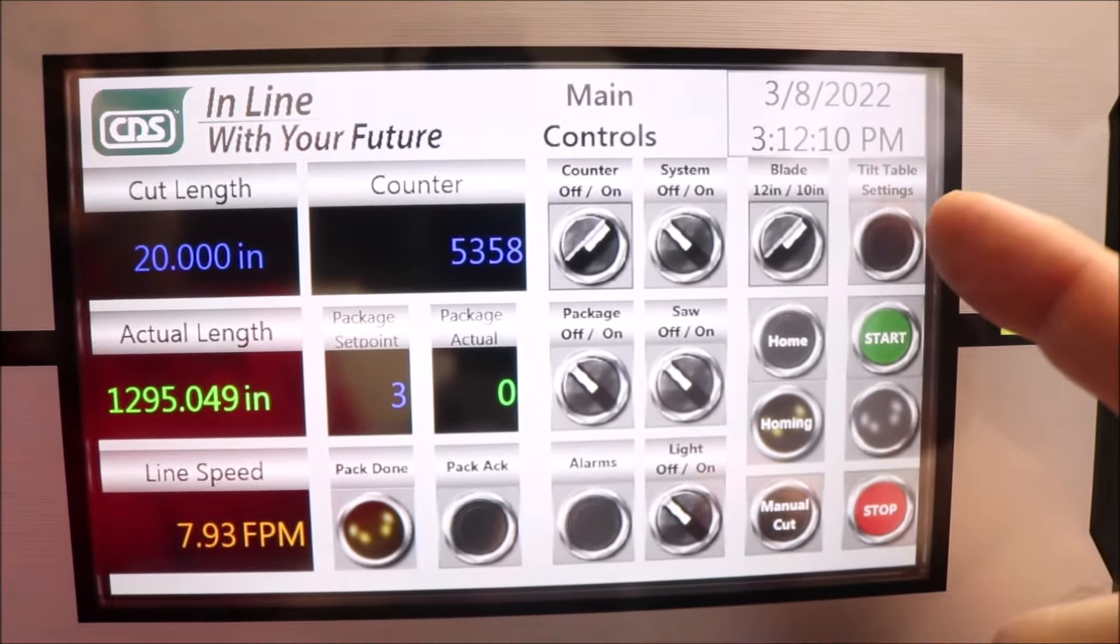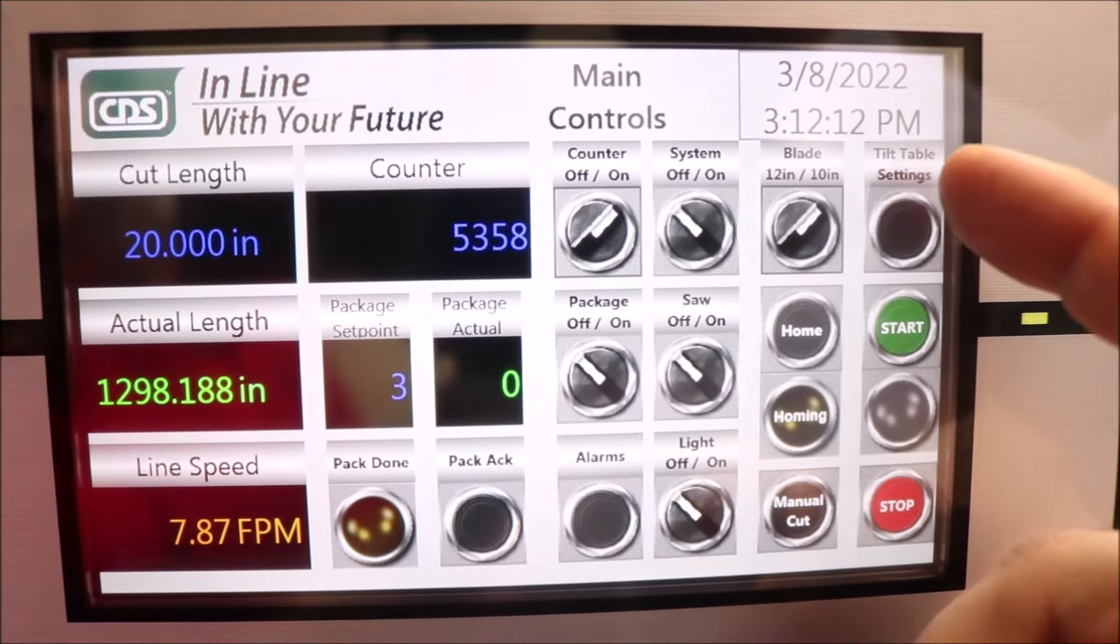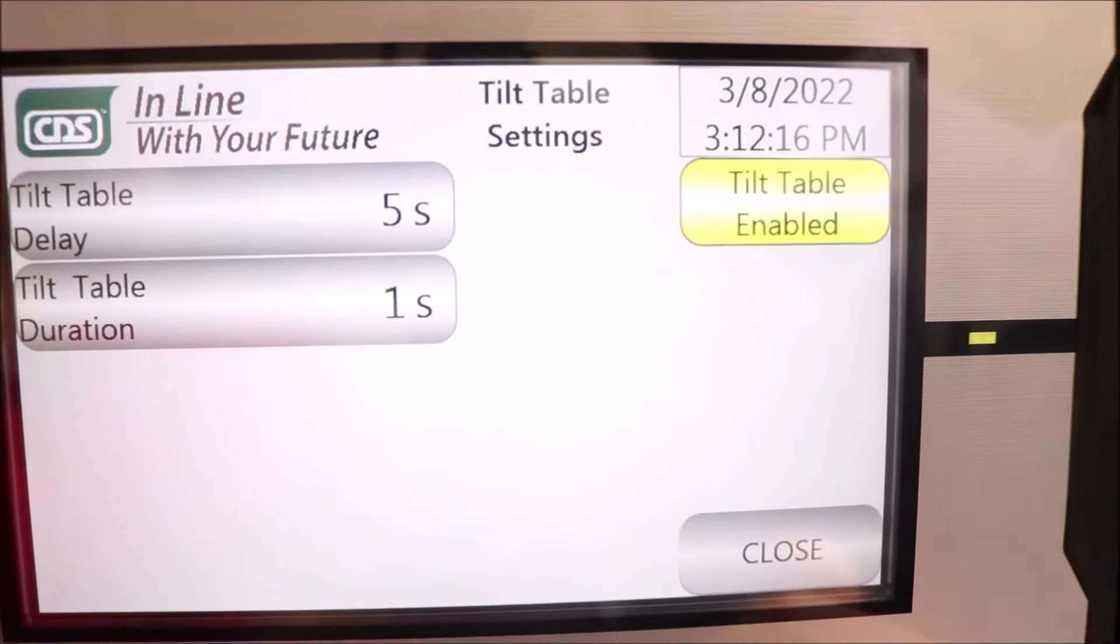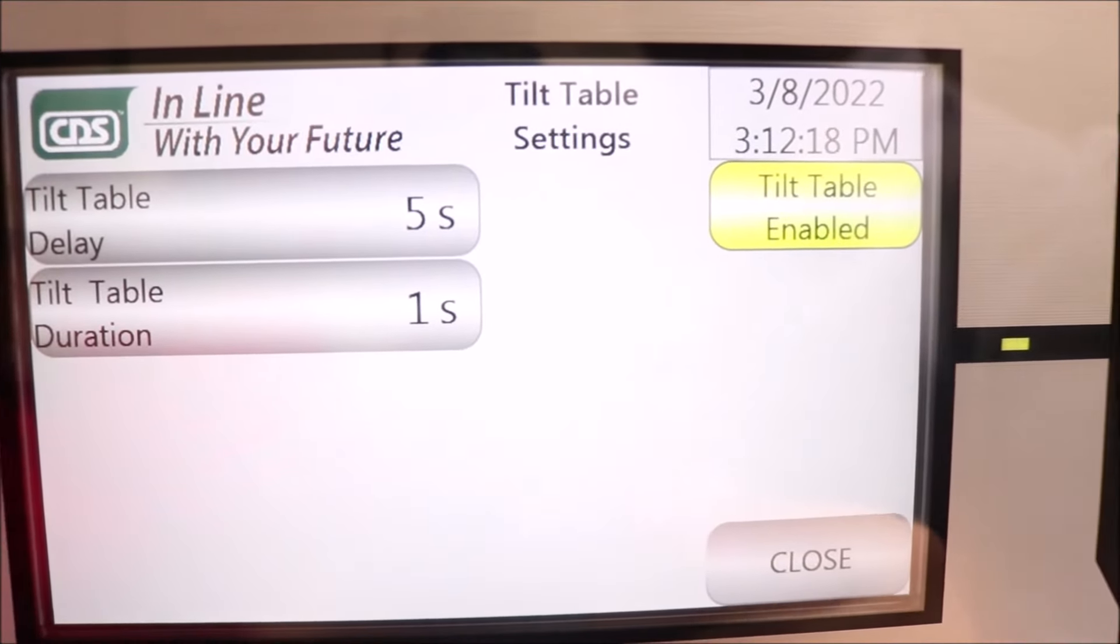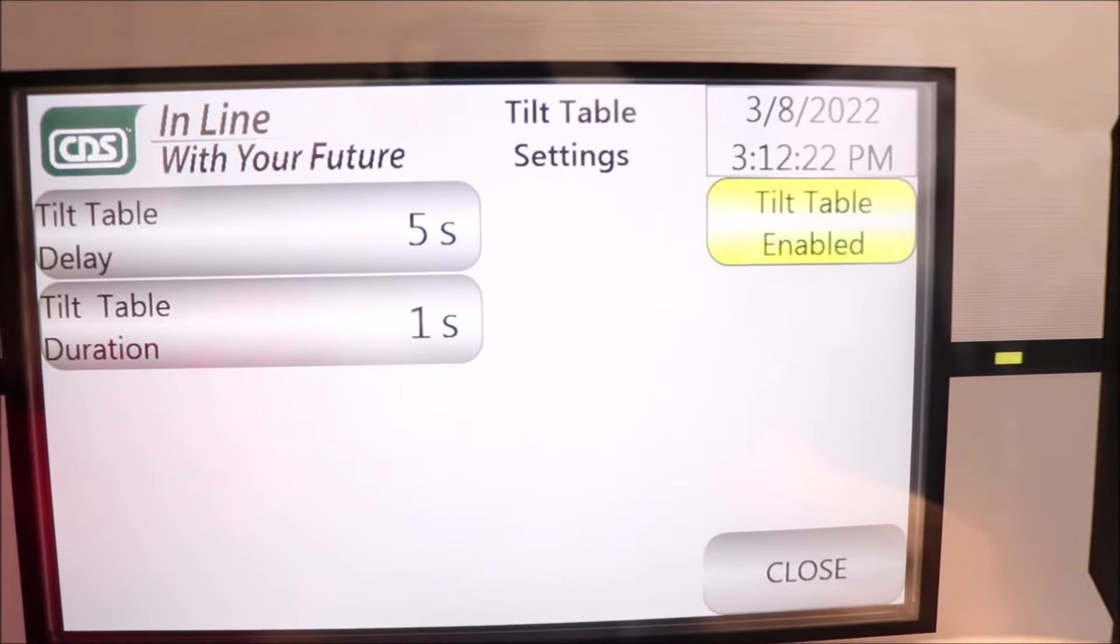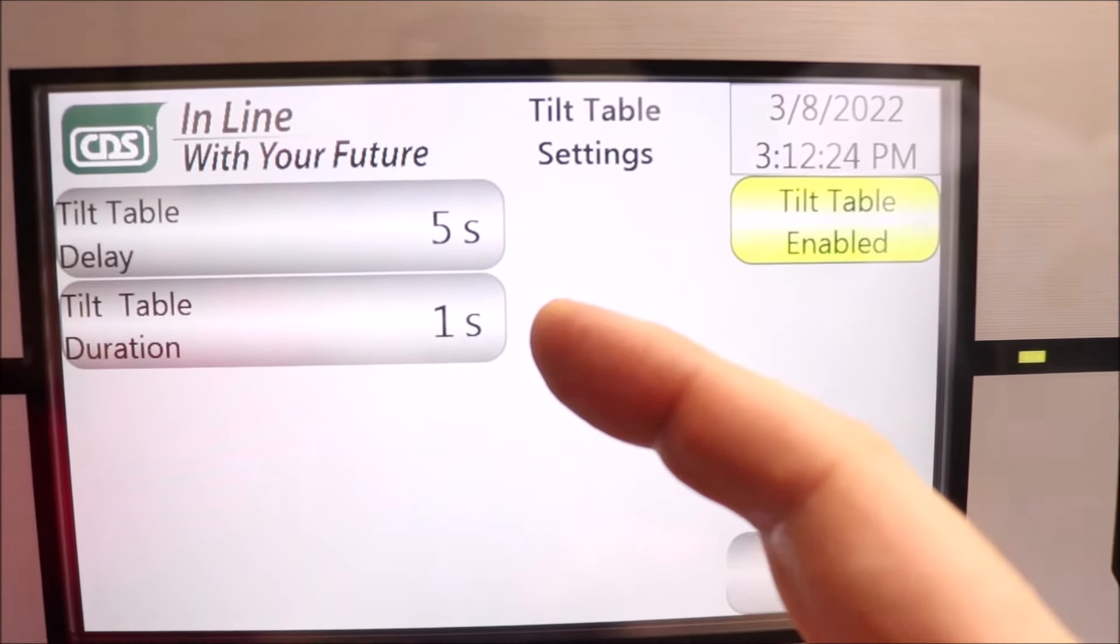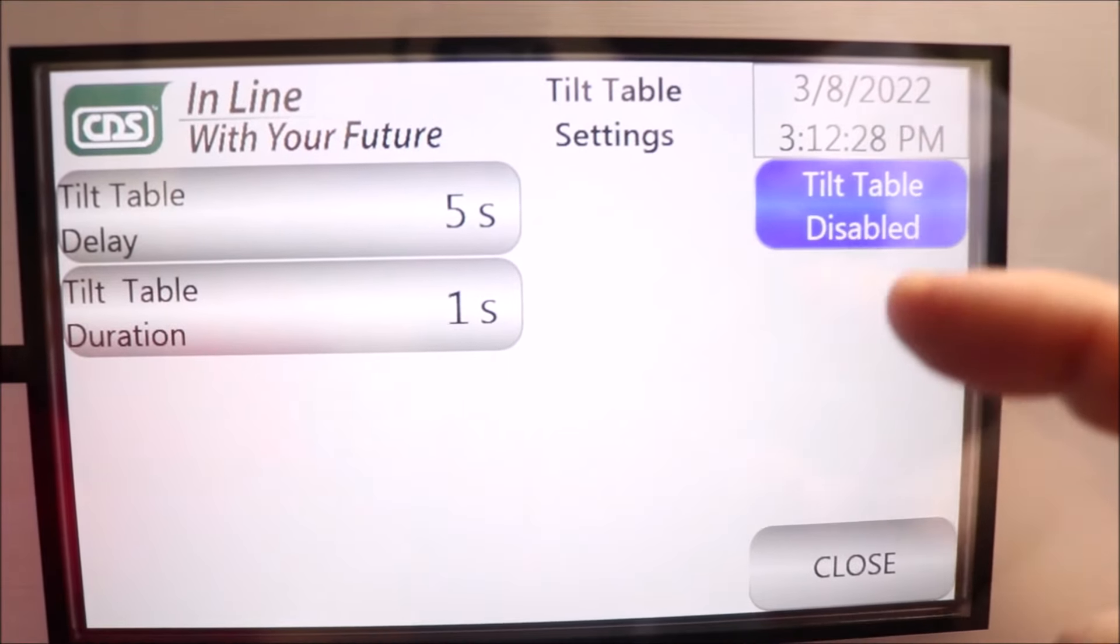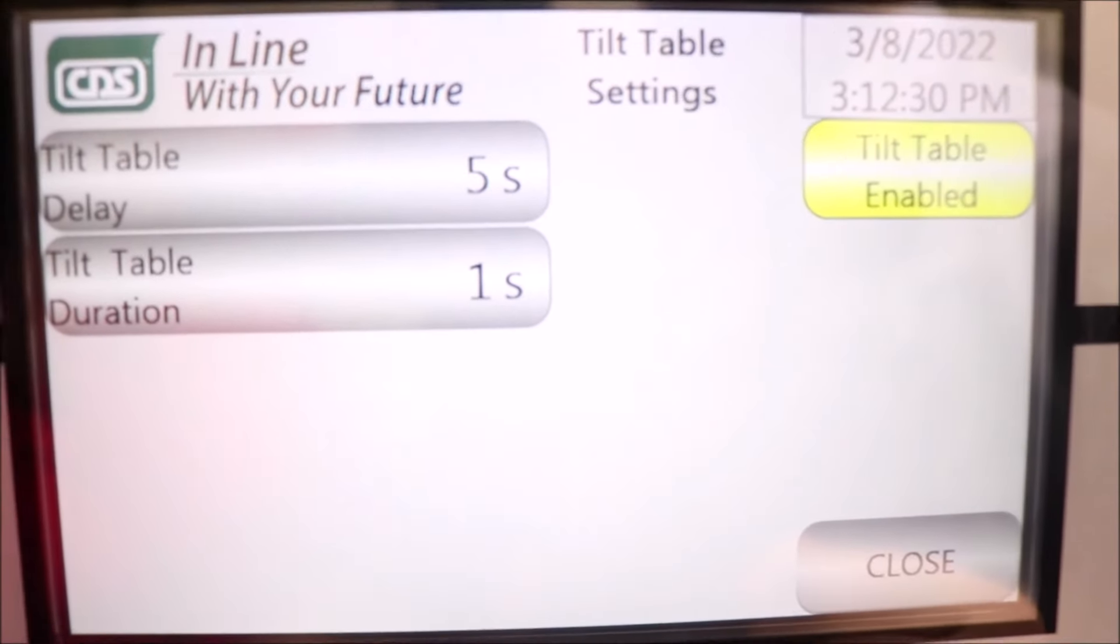The tilt table settings, when we click on the button, will bring you to another menu. If you have a tilt table connected to the machine, you will be able to adjust the delay of when we are going to engage the tilt table and also how long the tilt duration. And you have another button to activate or deactivate the tilt table function.